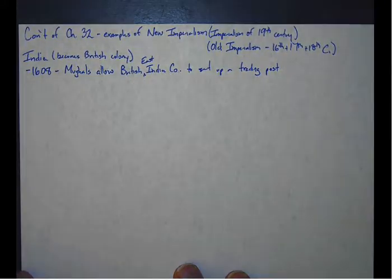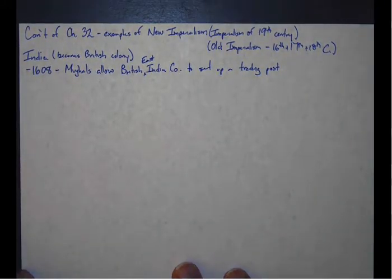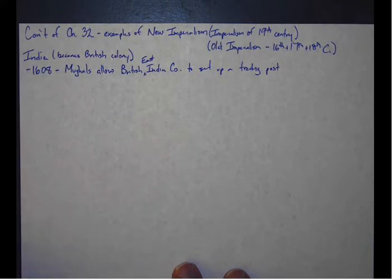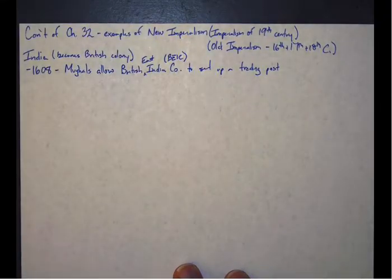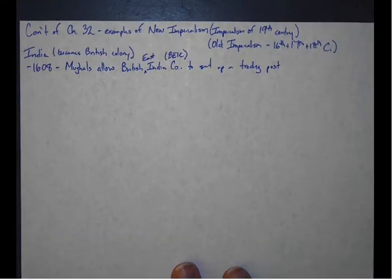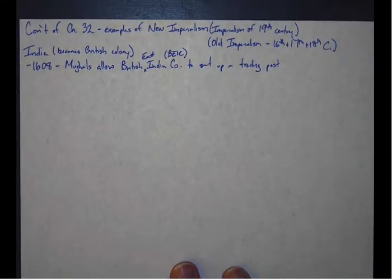Innocent enough, the Mughals allow the British East India Company to set up a trading post. I'm going to abbreviate this the BEIC because that is a lot to write.